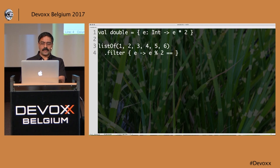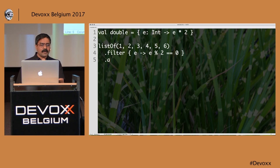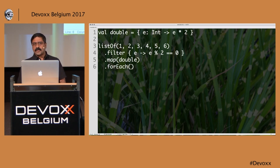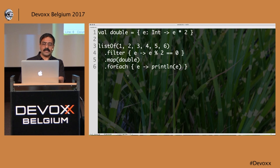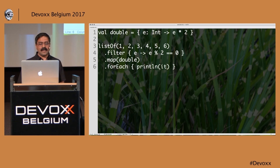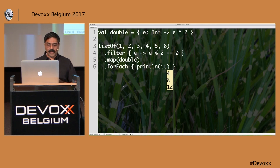Then I perform a map operation and just pass the 'double' lambda to it. Finally, a forEach method — here they have 'forEach' where you can iterate. I want to print each value, so I say given an element, print the element. Or if you don't want to give a silly name, you can simply say println(it). 'it' is a legitimate implicit variable — like in Groovy — that you can use for single-parameter lambdas.